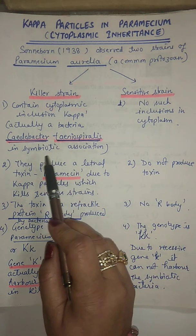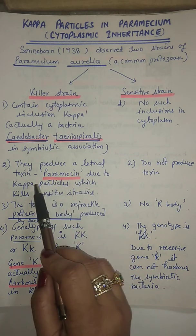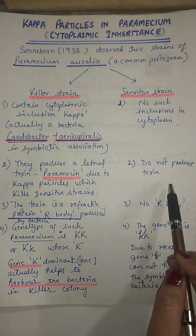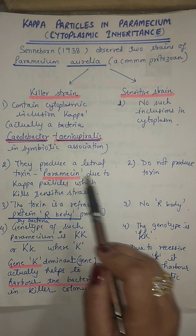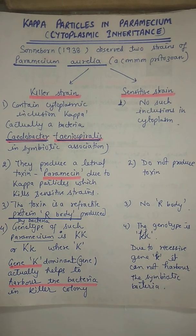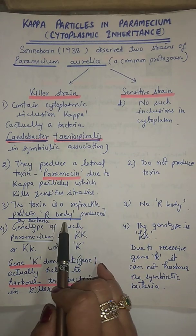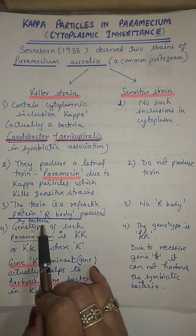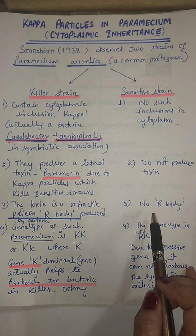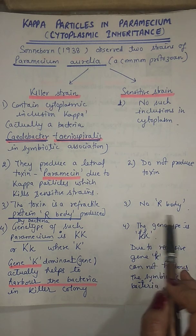This bacteria, or kappa particle, produces a toxin called paramecin — a lethal toxin which kills the sensitive strains. Paramecin is a refractile protein, also called an R body, produced by the kappa particle. In the sensitive strain, due to the absence of kappa particles, no R bodies are produced.